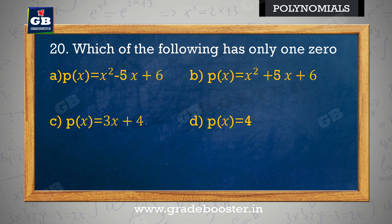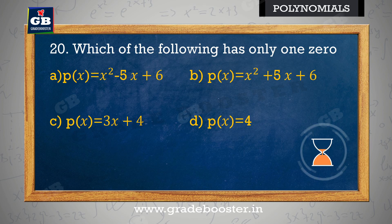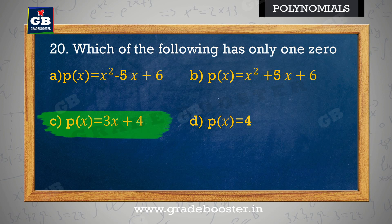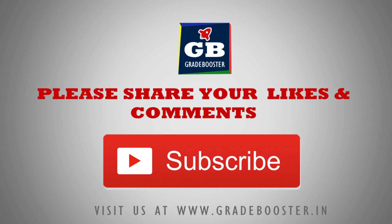Which of the following has only 1 zero? In mein se kaun si keval 1 zero rakhti hai? a) p(x) = x² − 5x + 6, b) p(x) = x² + 5x + 6, c) p(x) = 3x + 4, d) p(x) = x² + 5x + 6, x = 4, x = 5.